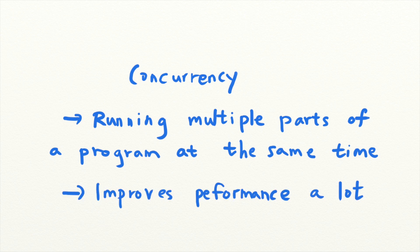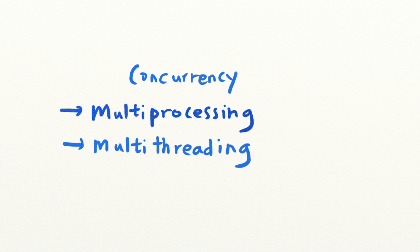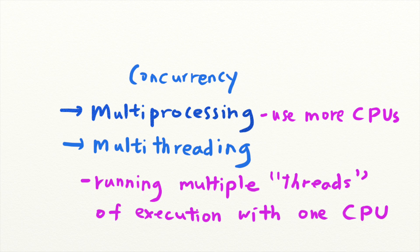Concurrency can drastically improve the performance of your programs. And there are two types of concurrency: multi-processing and multi-threading. Multi-processing refers to using multiple CPUs for computation at the same time, while multi-threading is the ability of a single CPU to provide multiple threads of execution.